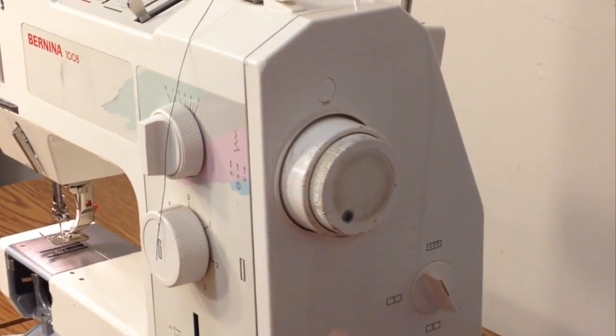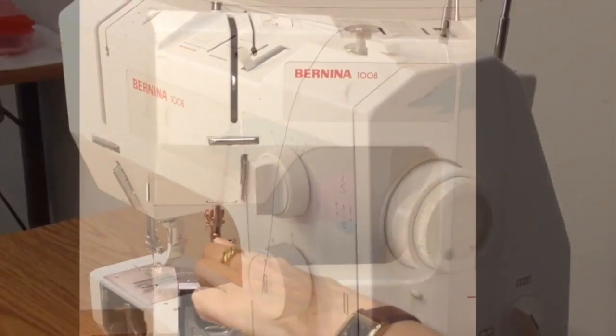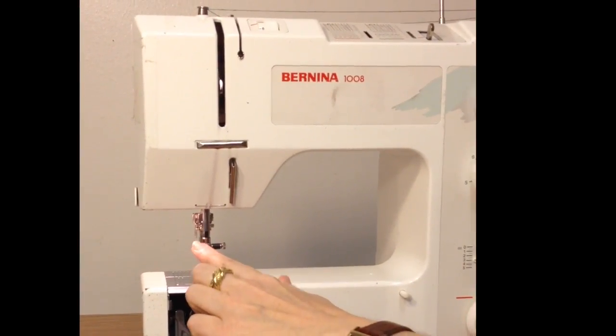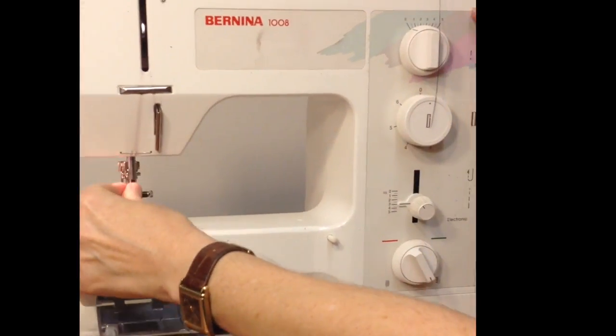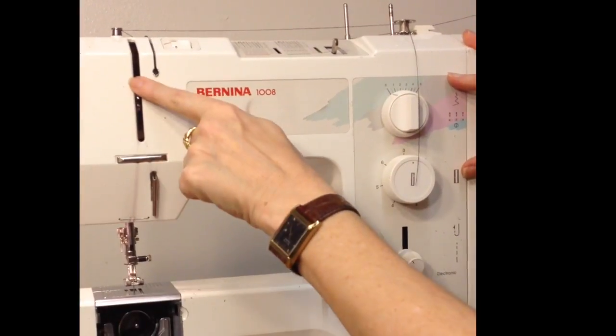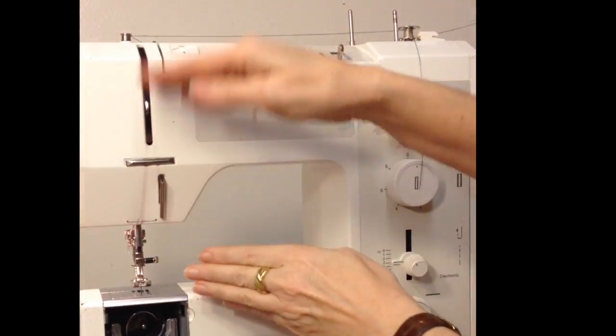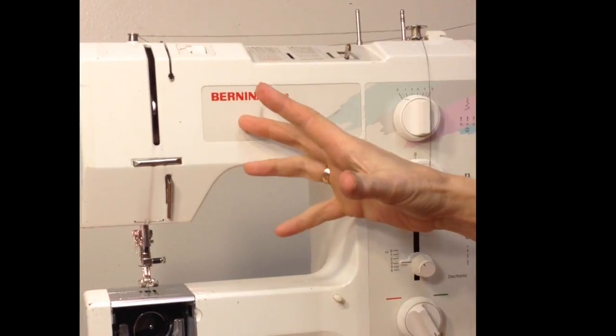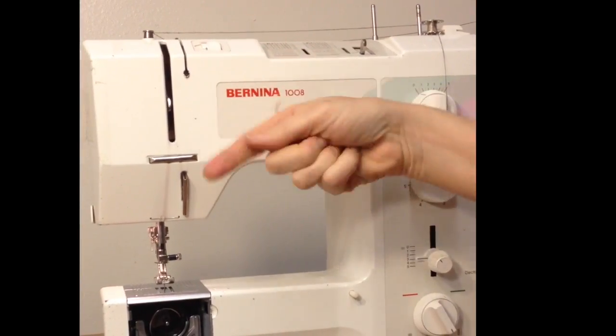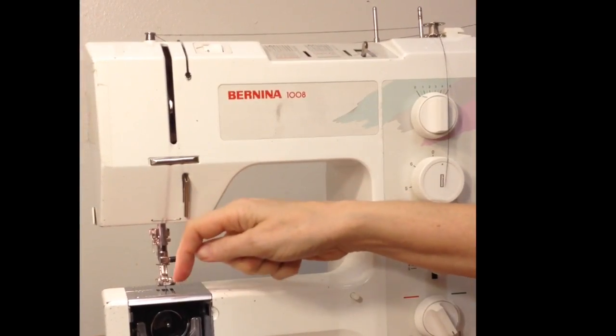So what does that mean? Back over here, disengaging the flywheel means that the needle and the thread uptake lever have been disengaged. Whereas usually when you're sewing, they are rotating and the needle is going in and out of the fabric.